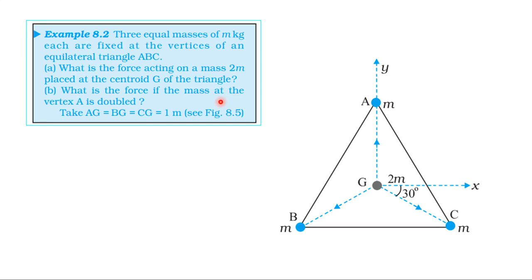What is the force if the mass at vertex A is doubled? The mass at vertex A is doubled — that is 2M. The centroid remains at the same location, and the net force involves the same mass at the centroid.